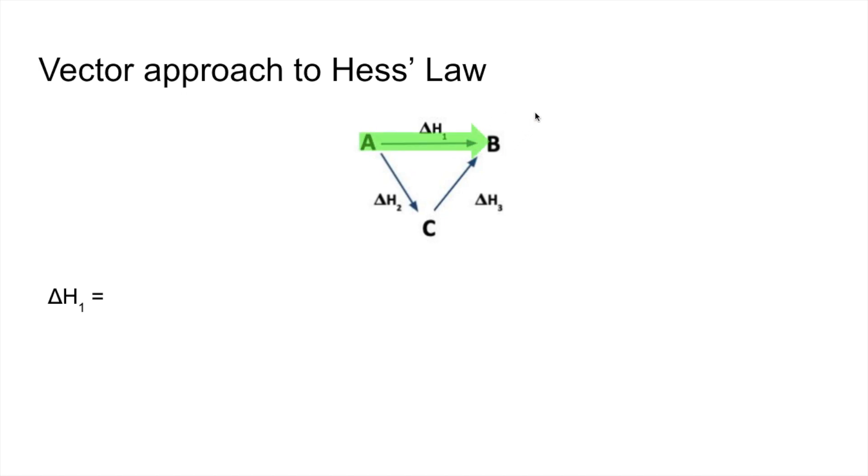Another way to do that is go A to C then to B. You can see that in the red route all the arrows are pointing in the direction of the route, so all we need to do is add those two enthalpy changes together. So ΔH₁ would equal the sum of ΔH₂ and ΔH₃.